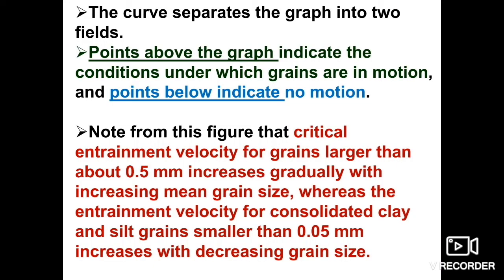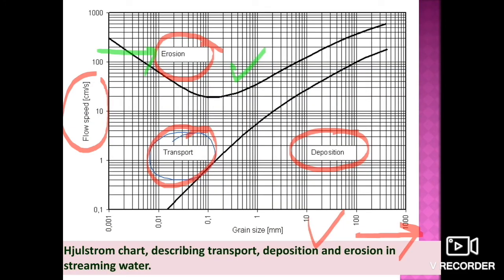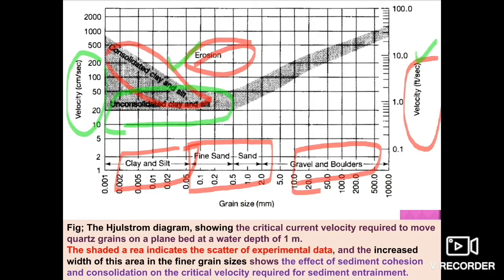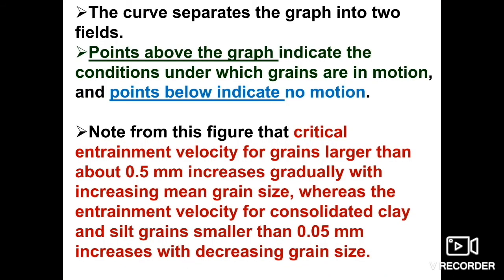The curve separates the graph into two fields. Points above the graph indicate conditions under which grains are in motion, while points below it indicate no motion. This distinction is an important feature of the Hjulström diagram.